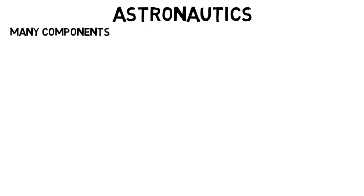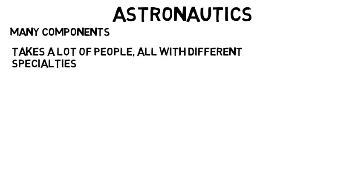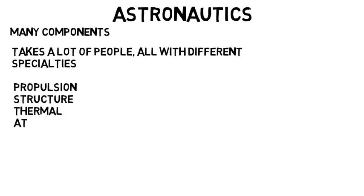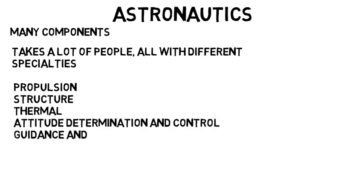Astronautical engineering is a branch of aerospace, but within that branch there are many components that you would focus on even more. Spacecrafts are really big, so it takes a lot of people all with different specialties to create one. Some of the common subsystems and components include propulsion, structure, thermal, attitude determination and control, guidance and navigation, and communications.